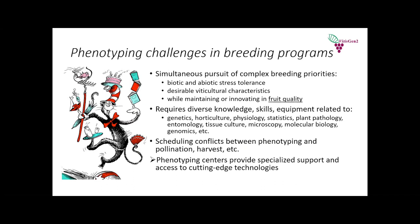It's important to realize that much of a breeding program is calendar-based. When it's flowering time, you need to be in the field making crosses; when it's harvest time, you need to be collecting fruit. You can't be out year-round phenotyping every trait. With these complexities in mind, Vitis Gen 2 developed the concept of phenotyping centers to provide specialized support, expertise, and access to cutting-edge technologies for phenotypic analysis.